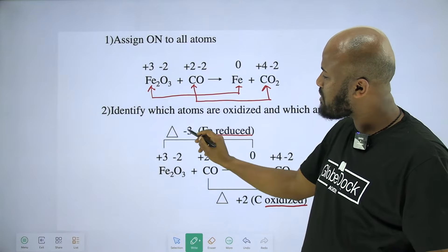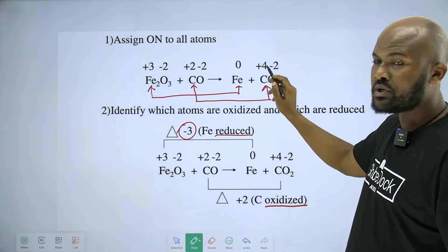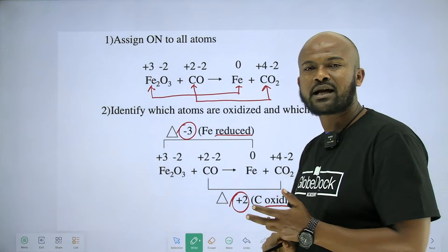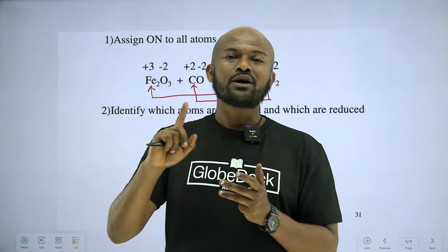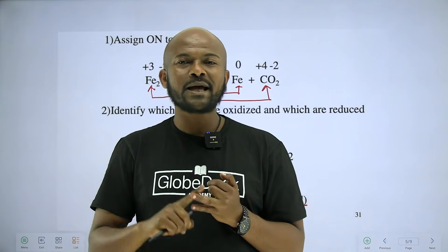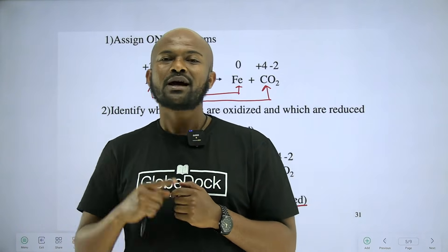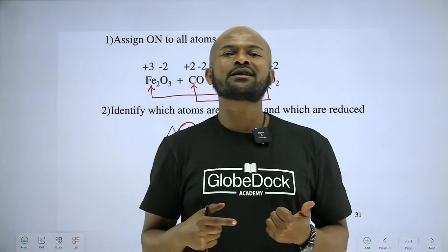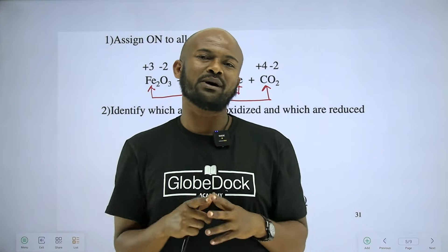The oxidation numbers change: plus 3 to minus 3, plus 2, plus 2. This is the second step. The third step is to gain the electron and balance the electron — gain the electron, loss the electron, balance the electron.